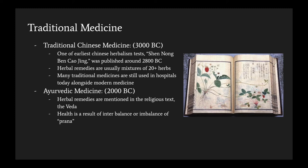Now we'll get into some of the earliest documented forms of traditional medicine. While Native American and African traditional medicine are actually older, concrete documentation is harder to find. One of the oldest traditionally documented medicines is the Chinese herbalism text, published around 2800 BC. These herbal remedies are usually mixtures of 20 or more herbs outlined in this text. Many traditional medicines are still used in hospitals in this region alongside modern medicine. Another very old medicinal system is Ayurvedic, with herbal remedies mentioned in the religious text, the Veda.